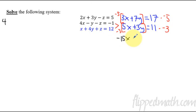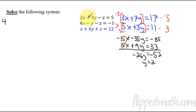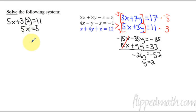Rewriting: negative 15x minus 35y equals negative 85. I made a mistake — it should be positive 15x, positive 9y equals 33, so I have opposites and can add those together. The x's cancel. Adding gives negative 26y equals negative 52, so dividing both sides by negative 26 gives y equals 2. Now I need x: plugging y equals 2 into 5x plus 3 times 2 equals 11 gives 5x plus 6 equals 11, so subtracting 6 from both sides gives x equals 1.